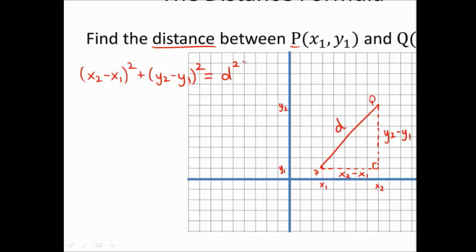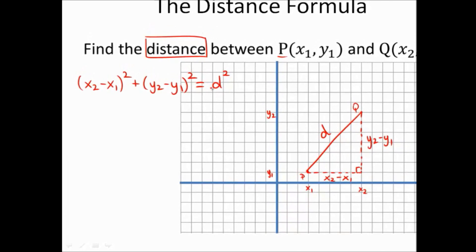So, if we solve for d by itself, a distance formula, that would mean we'd have to square root both sides.